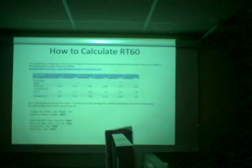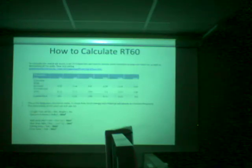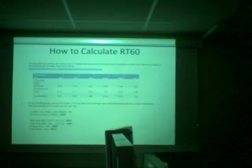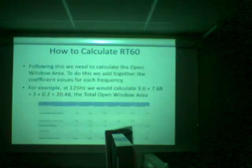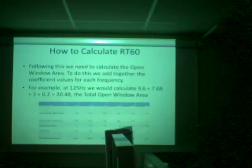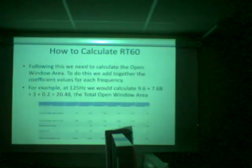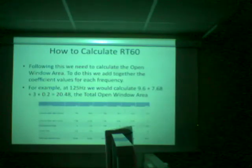The dimensions of the room are a length of 5 m, width of 4 m, and height of 3 m, giving a volume of 60 meters cubed, a wall area of 94 meters squared, a ceiling area of 20 meters squared, and a floor area of 20 meters squared. We then calculate the open window unit area by adding together the coefficient values for each frequency. For example, at 125 Hz, we calculate 9.6 plus 7.68 plus 3 plus 0.2, which equals 20.48.